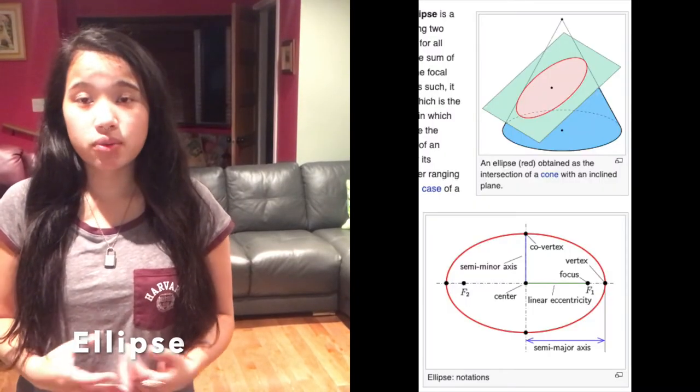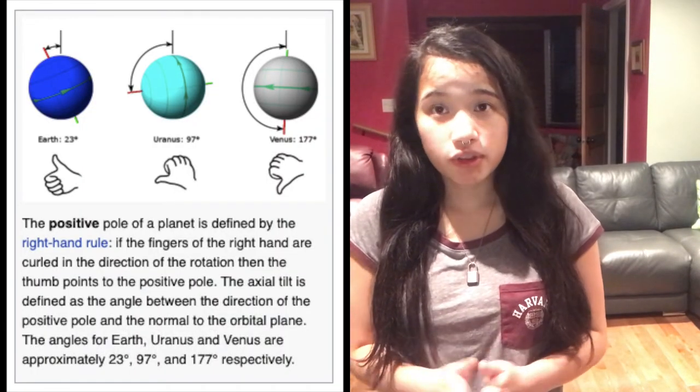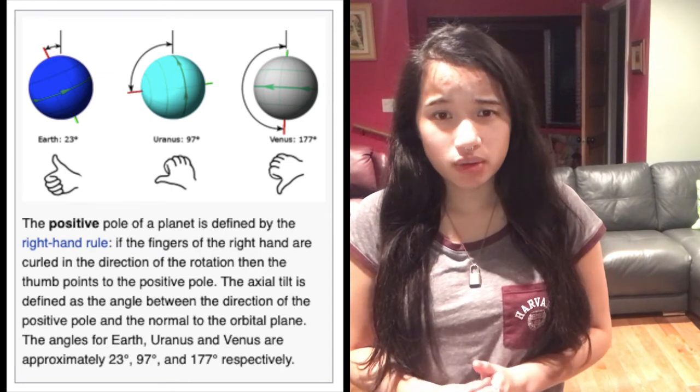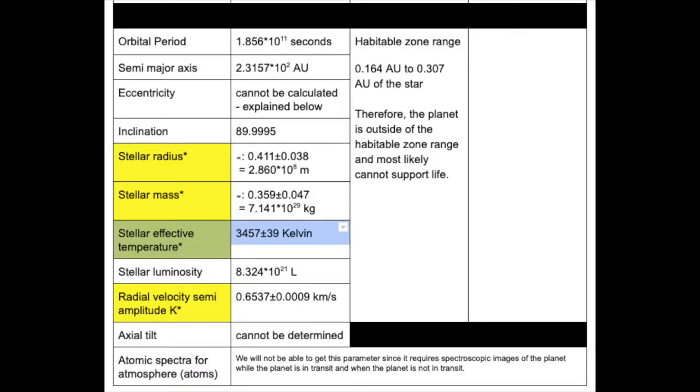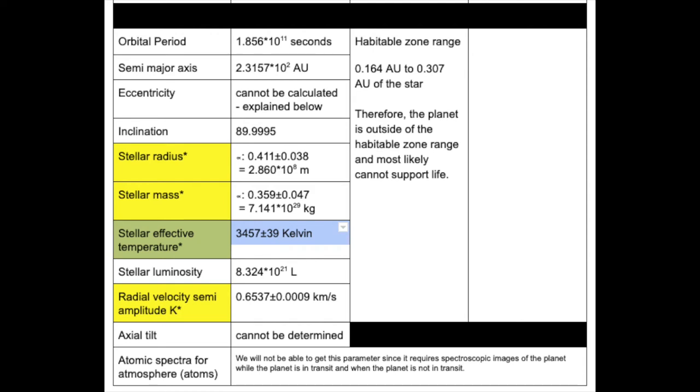An ellipse is the plane curve surrounding two focal points. The axial tilt is the angle between an object's rotation axis and its orbital axis — the angle between its equatorial plane and its orbital plane. The axial tilt cannot be determined. For atomic spectra of the atmosphere, the spectrum consists of frequencies of electromagnetic radiation emitted or absorbed during transitions of electrons between energy levels, and absorbed photons show up as dark lines. The atomic spectra for the atmosphere cannot be determined since it requires a spectrometric image of the planet both in transit and out of transit.